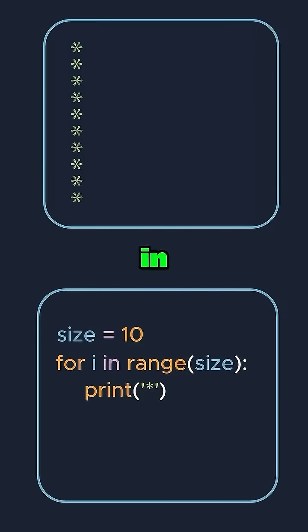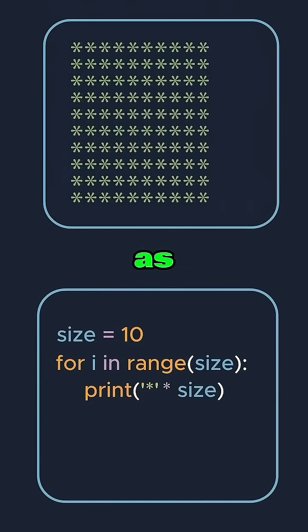Now let's multiply the number of stars in the print statement by the variable size. This creates a square shape as the output with a total of 100 stars because we print 10 stars 10 times.